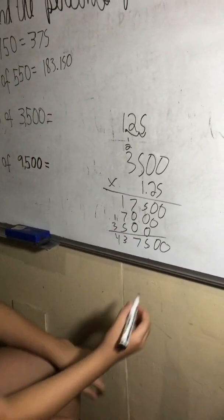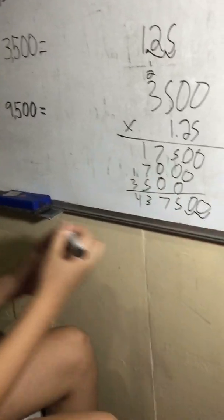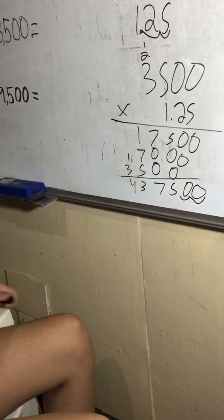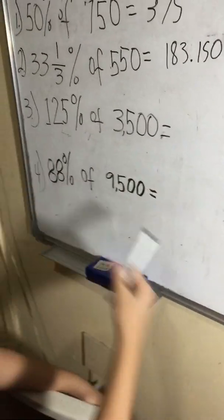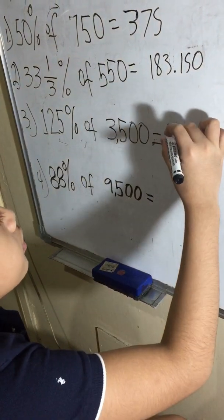Since there are two decimal places, we move this two to the left. So as you can see, it increased because this is over 100%. So the answer for number three is 4375.